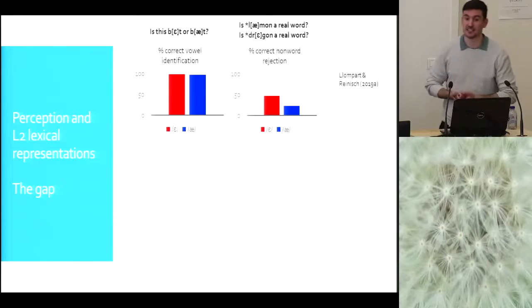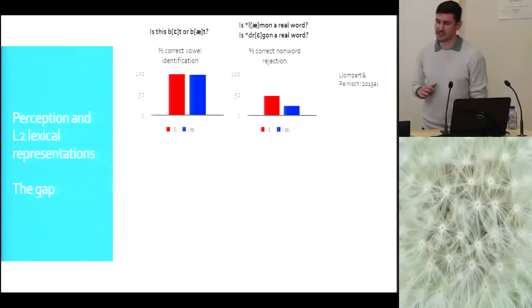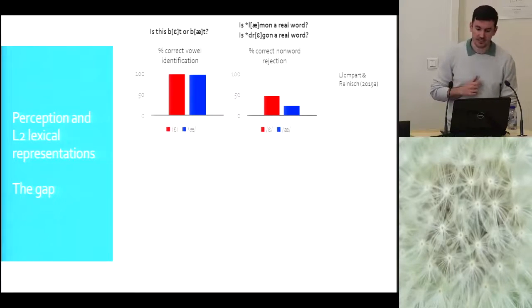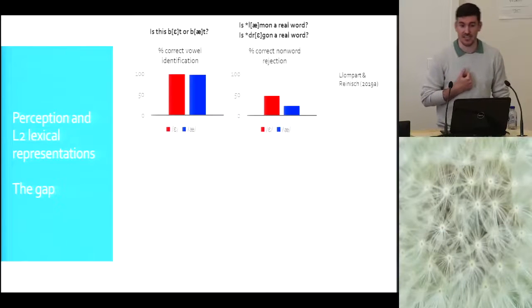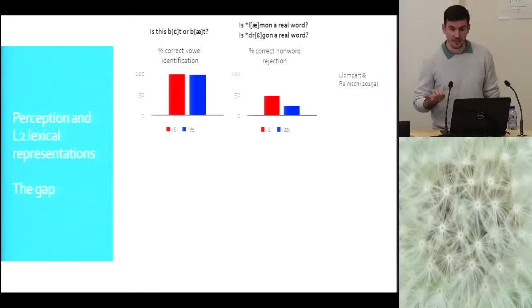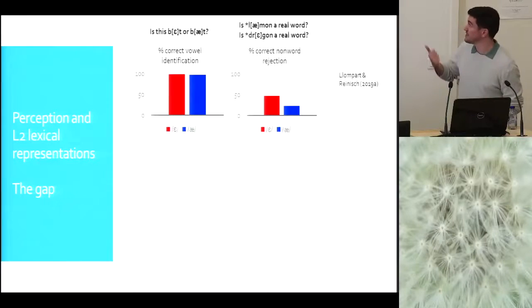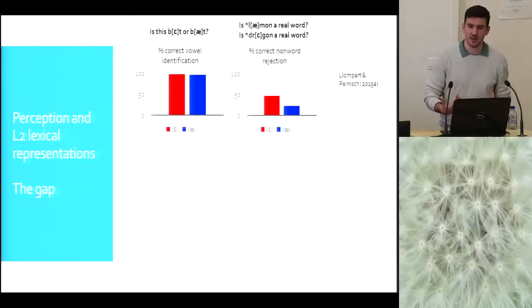So it's like 97%, something like that. Categorization was great. Second task is a lexical decision task with vowel substitutions, like phoneme substitutions for different contrasts, including this difficult e-a contrast. So then you're asked, is laman or dragon a real word? And you have to say yes or no. Ideally, you would say no, like the idea is that you reject those words, or these non-words, because of the substitution there. What happens there is that learners were much worse at that.